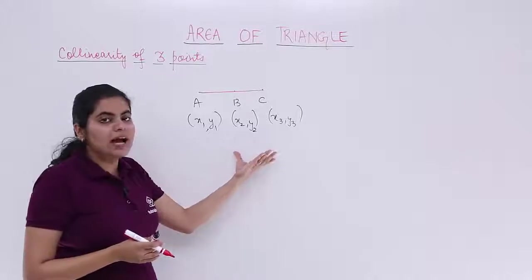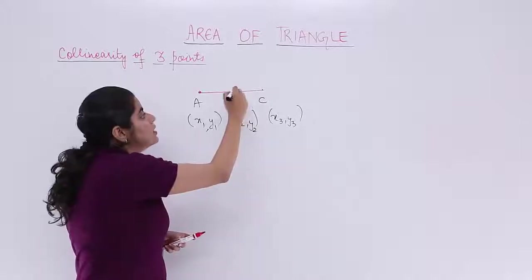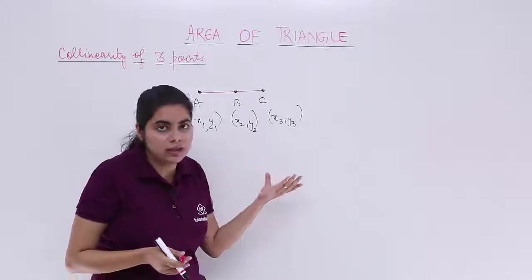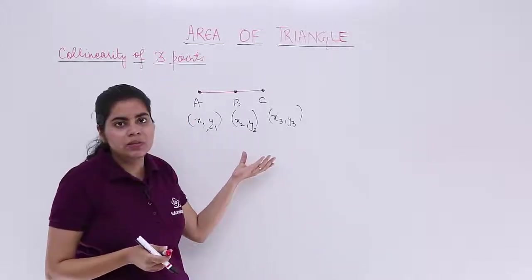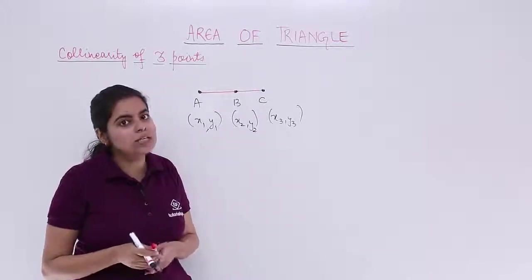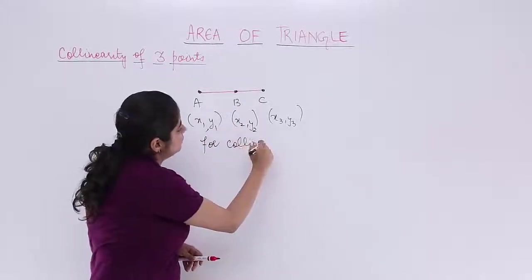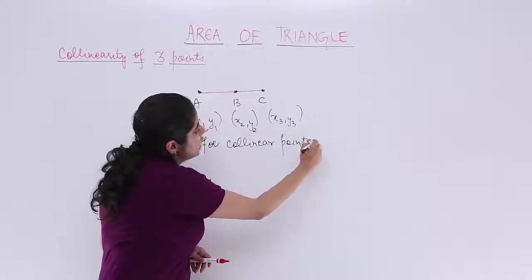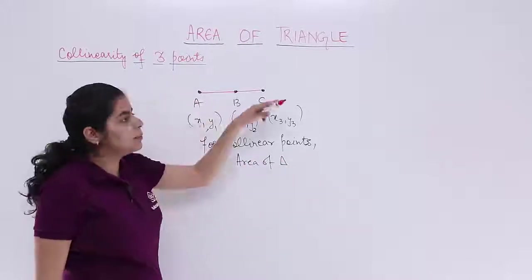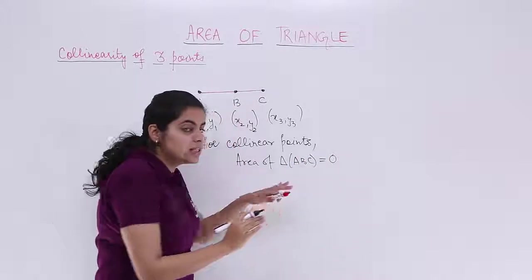Now being collinear actually means nothing else except being on the same straight line. And if they are on the same straight line, what can you conclude about the area of this triangle? Actually, no triangle is formed with these points. Since no triangle is formed, the area would also not exist — it would be 0. So for collinear points, the area of the triangle formed by these three points is 0.